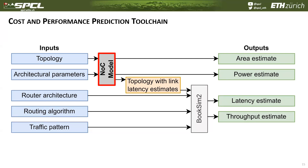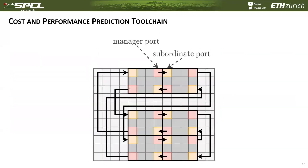Let's have a deeper look into our custom network-on-chip model. We model each chip as a grid of unit cells. A unit cell can either contain part of a tile — the cells in dark grey — or be available for the routing of links — the white cells. In this grid of unit cells, we perform approximate floor planning and link routing. Based on this approximate floor plan, we can estimate the area required to build a chip with a given network-on-chip topology, and we can also estimate the power consumption. Furthermore, since we know the approximate length of all the links, we can estimate link latencies, which are then used by BookSim.